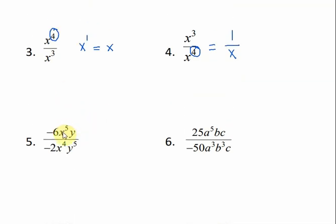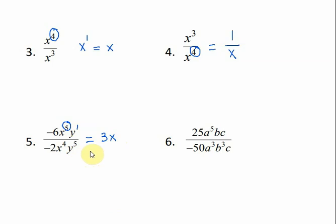Now for something more complicated — we do each thing separately. For the coefficients: negative 6 divided by negative 2, negative divided by negative is positive 3. For my x's: x to the 5th divided by x to the 4th — my answer goes on top, and it's just x. For my y's: y to the understood 1 divided by y to the 5th gives y to the 4th, and since my biggest exponent is on the bottom, that y to the 4th goes on the bottom.